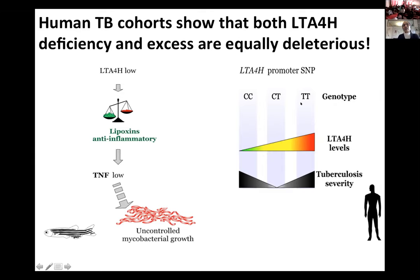We went to a cohort of TB meningitis patients in Vietnam to see how this variant behaved with respect to mortality. We had expected that the lows — the CCs — would fare the worst, CTs in the middle, and TTs might even do best because of more inflammation. However, we found that CCs did badly, CTs did best with very little mortality, but TTs did just as badly as CCs. We were getting what is called in genetics a heterozygous advantage model.